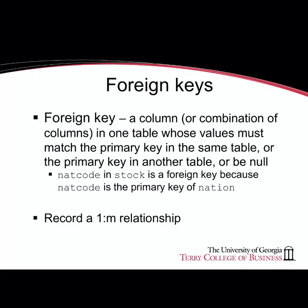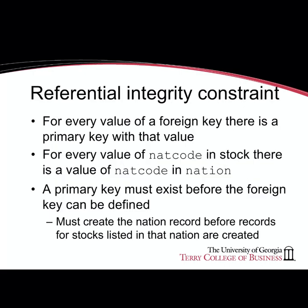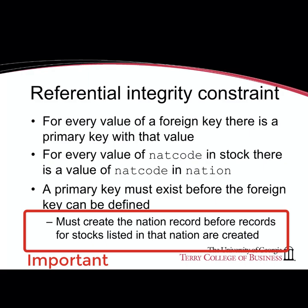Associated with foreign keys is the notion of referential integrity constraint. This is a constraint or restriction on the potential values of a foreign key. It states that you cannot have a value of a foreign key if that value doesn't already exist as a primary key — only pre-existing primary key values can be valid foreign keys. This referential integrity constraint exists between two tables that have a one-to-many relationship.